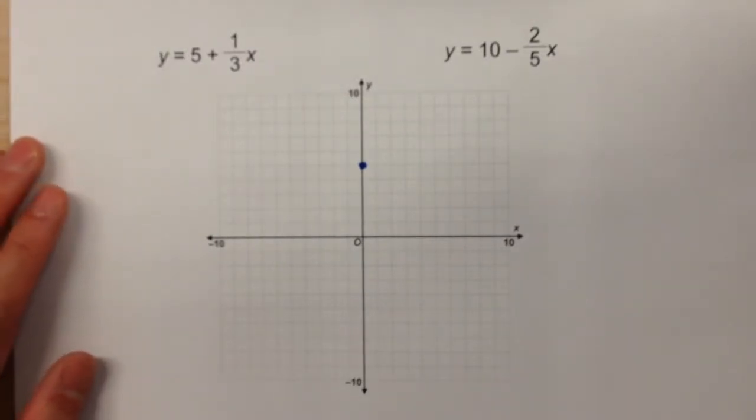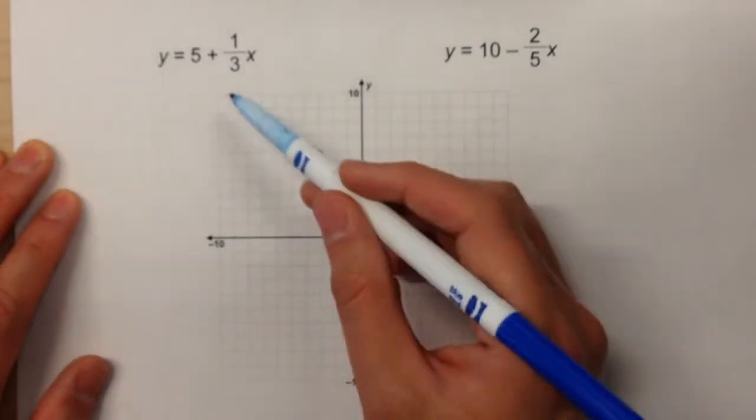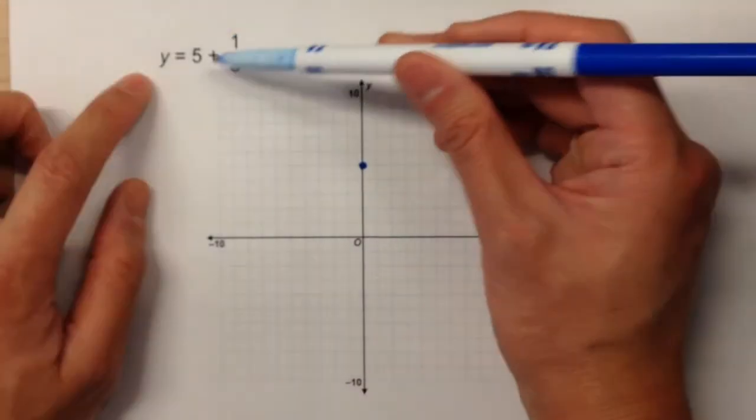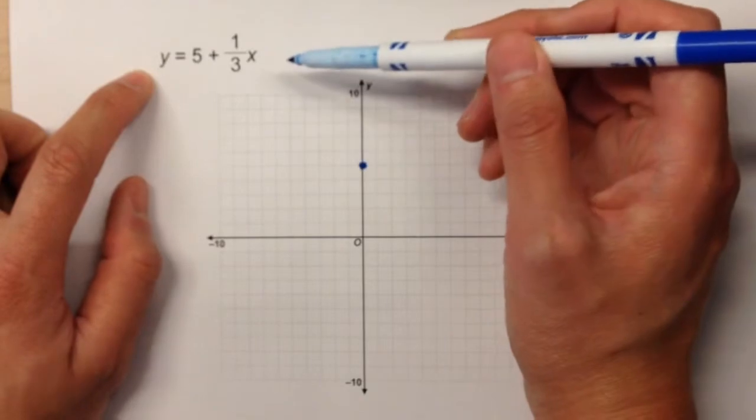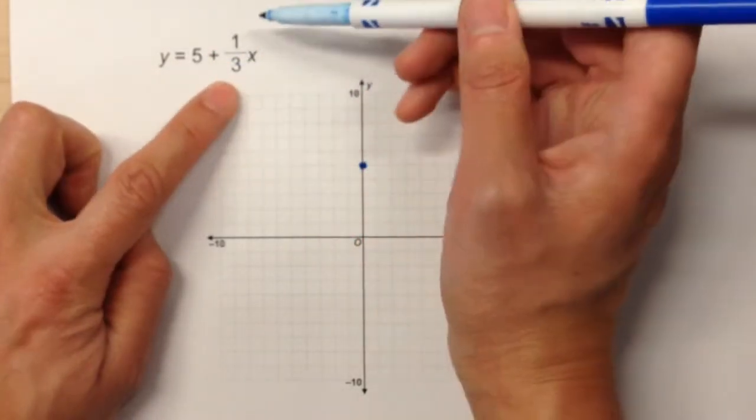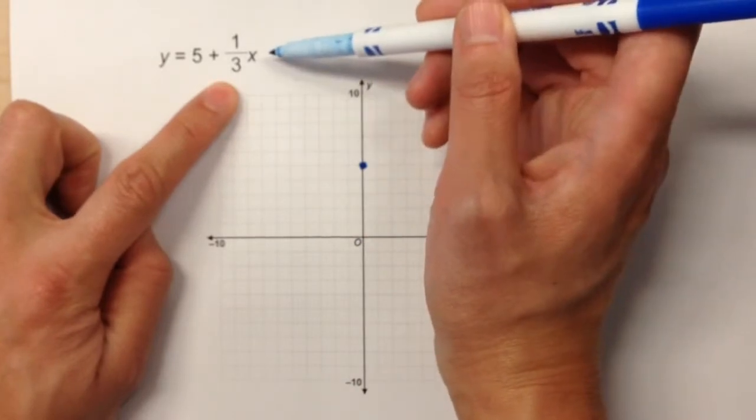Today we were graphing equations on the coordinate grid. We've got two equations right here, and if you notice our first equation, our y-intercept is five and our slope is one-third. Remember the number next to the x is always your slope.